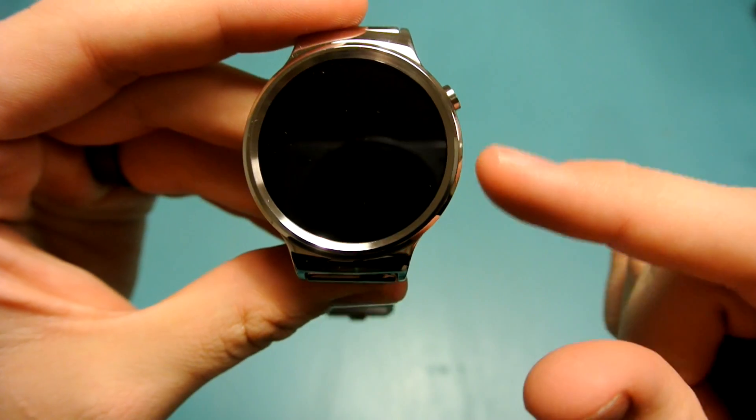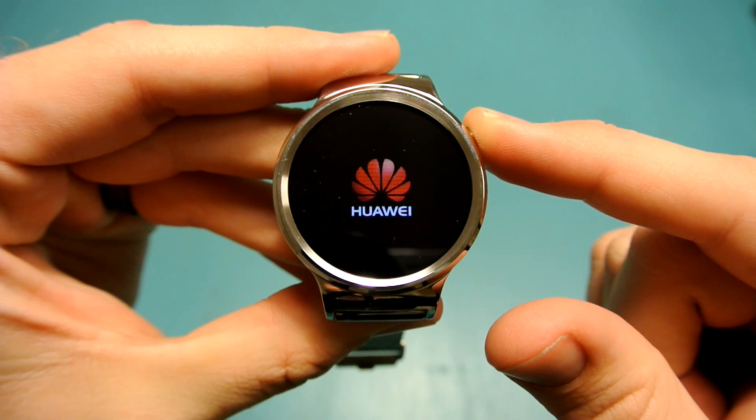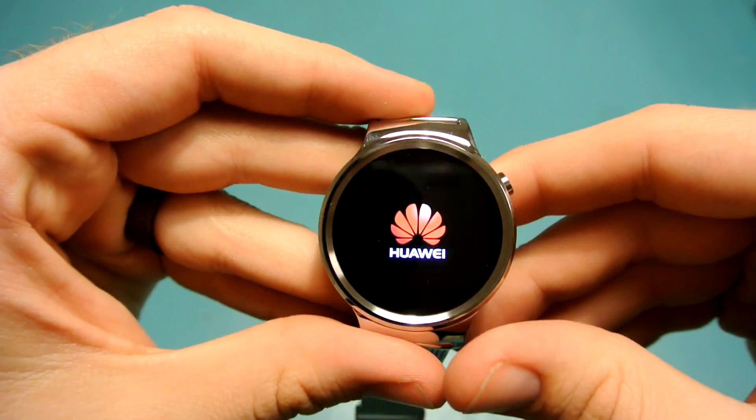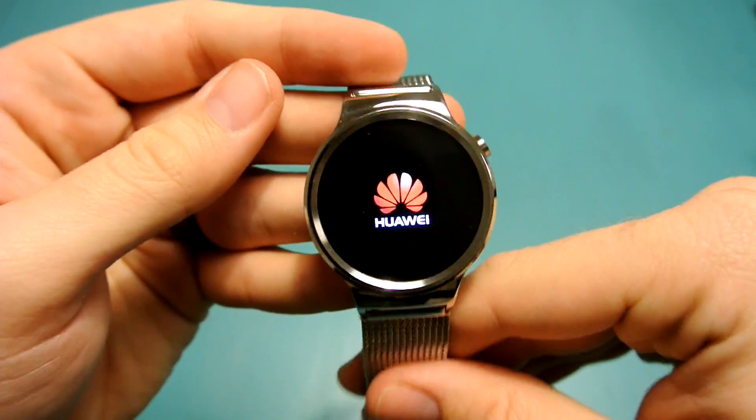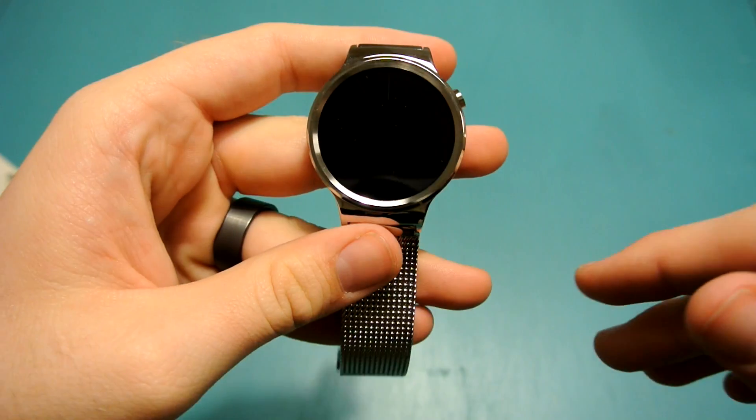And then the button is in the 2 o'clock position instead of the 3 o'clock, which is great because that's a natural place to put your hand. So we'll start it up here. You see the Huawei logo on the front. Very deep dark blacks. It looks really, really nice.